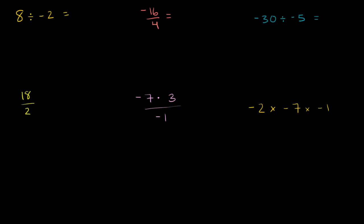Now that we know a little bit about multiplying positive and negative numbers, let's think about how we can divide them. What you'll see is that it's actually a very similar methodology. If both are positive, you will get a positive answer. If one is negative but not both, you're going to get a negative answer. And if both are negative, they will cancel out and you will get a positive answer.